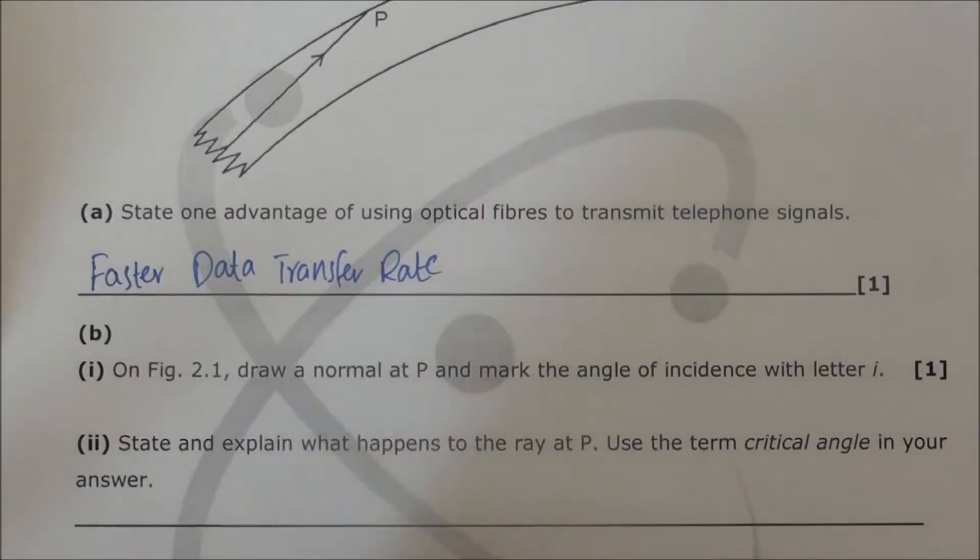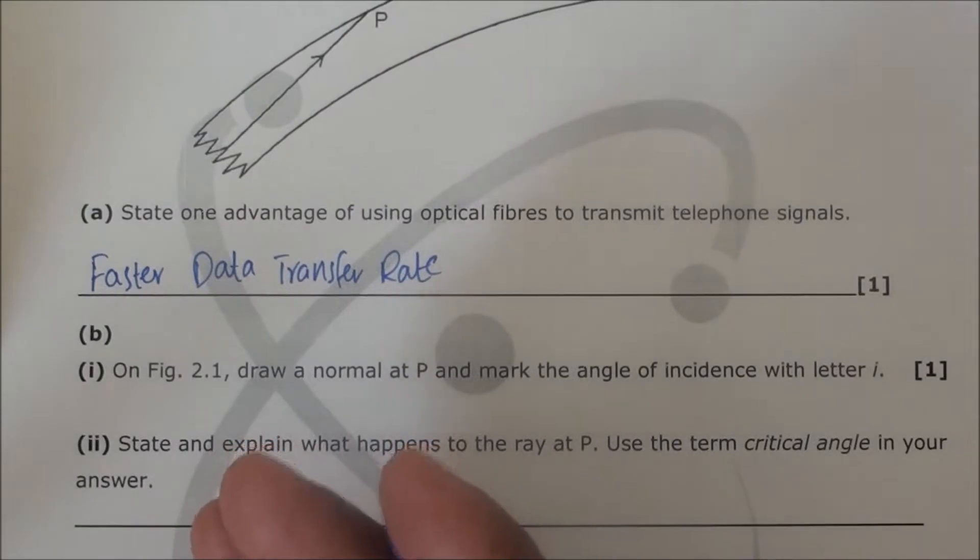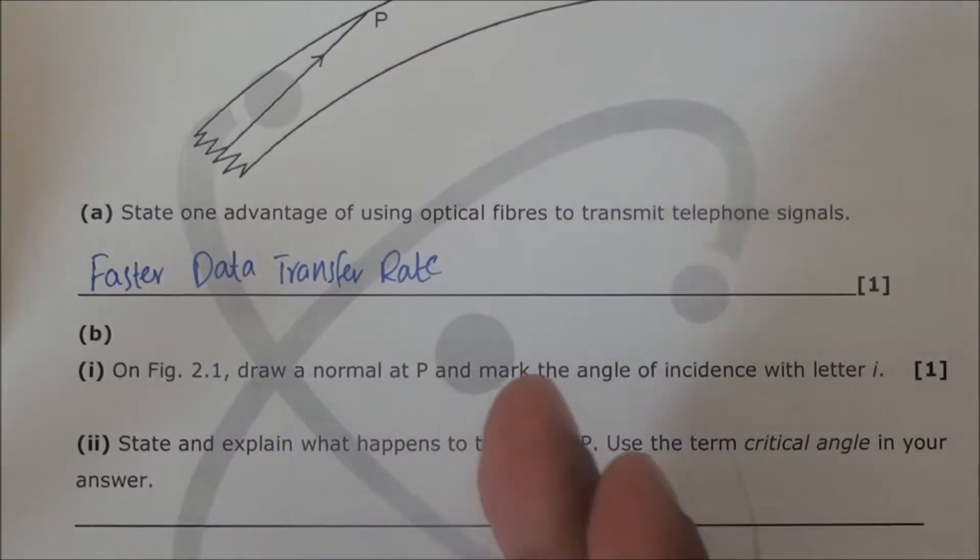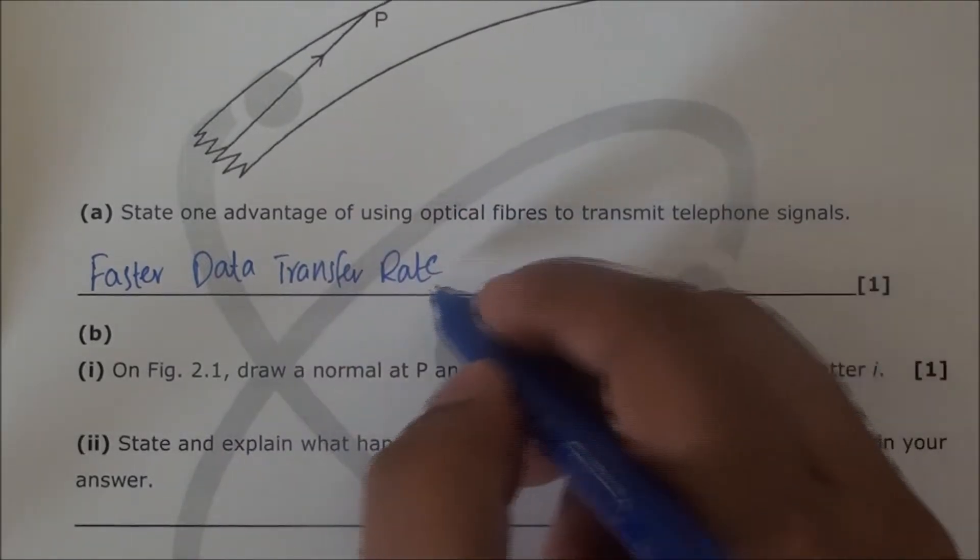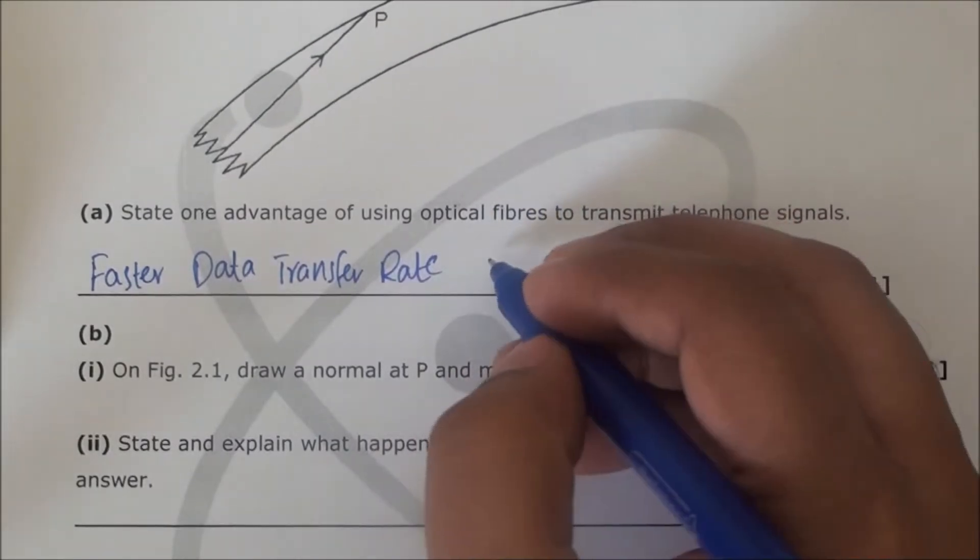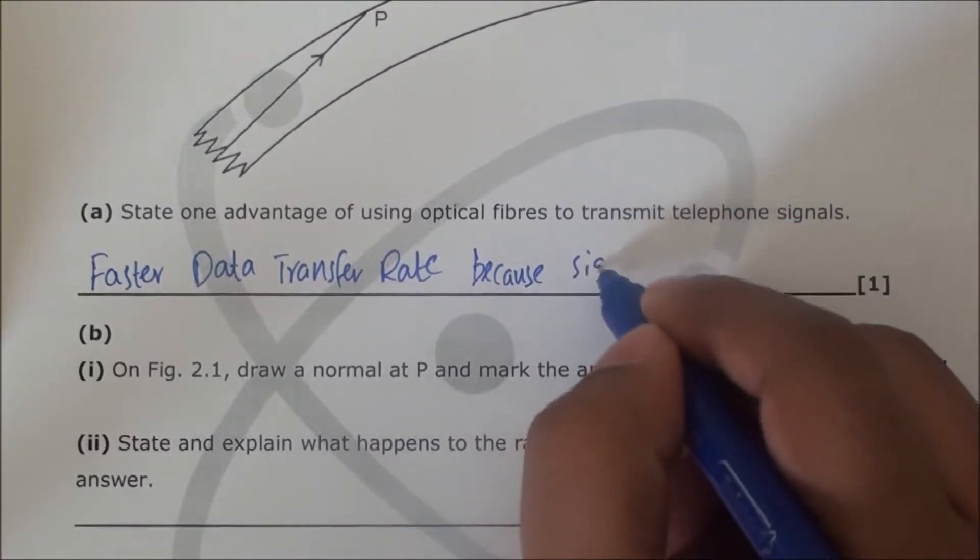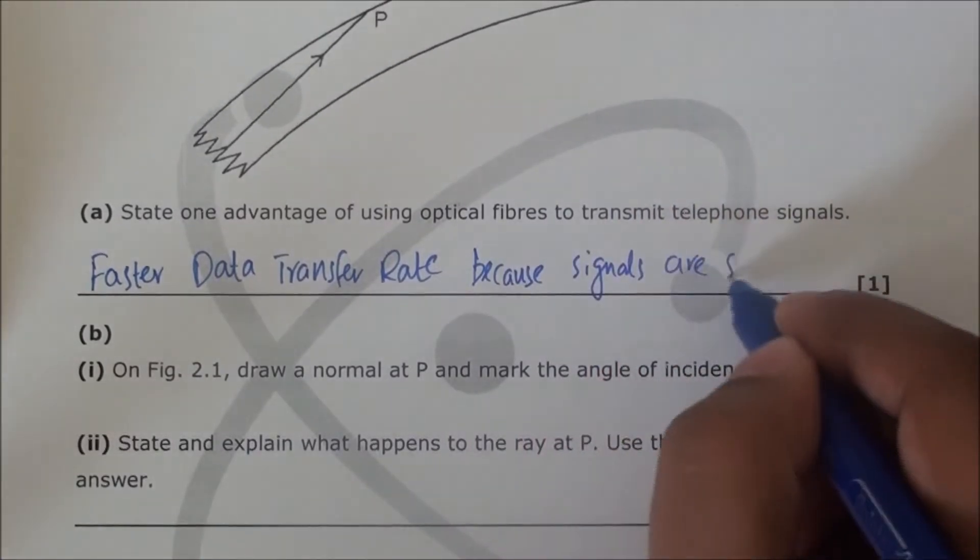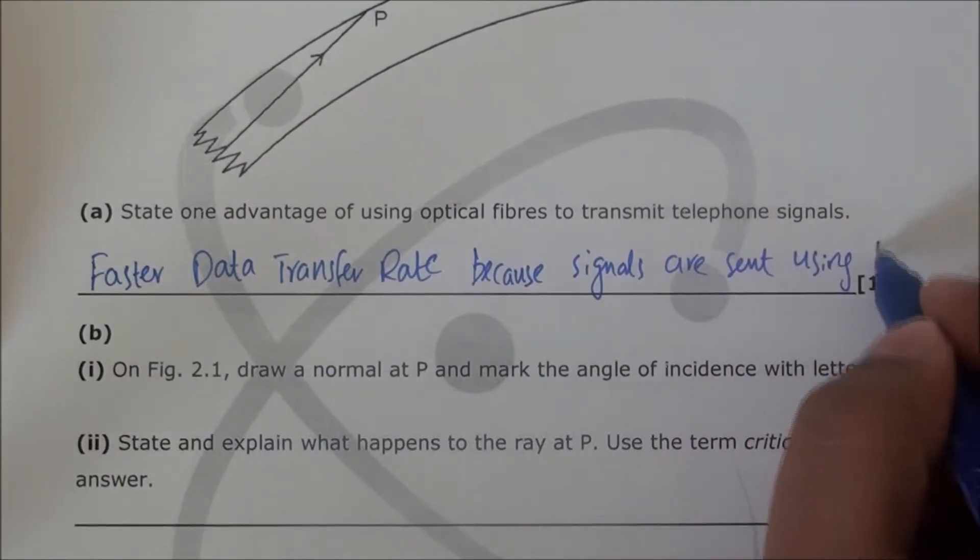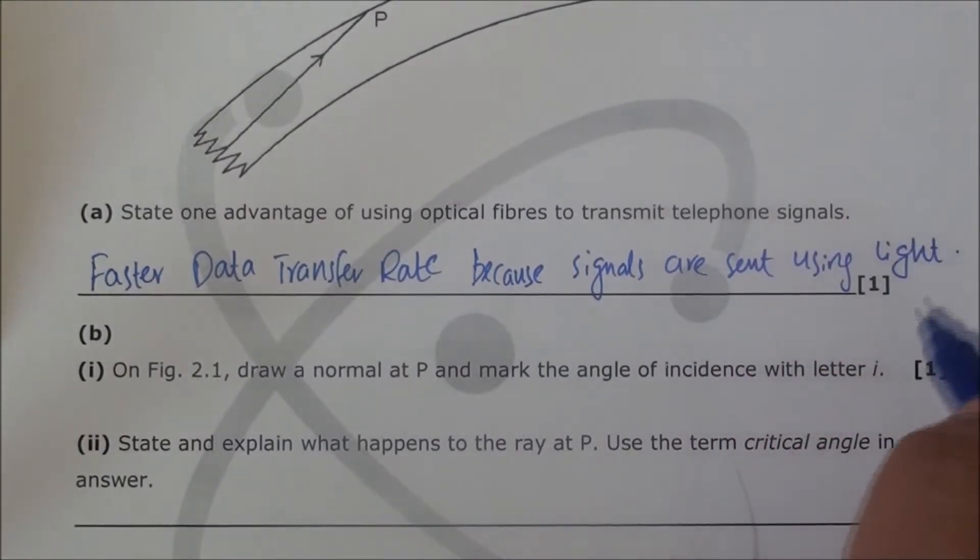In normal copper wires, we have data transfer through electric current. In optical fibers, we have data transfer through light. Since light is the fastest thing humans know of, optical fiber has a faster data transfer rate. You can simply say because signals are sent using light.